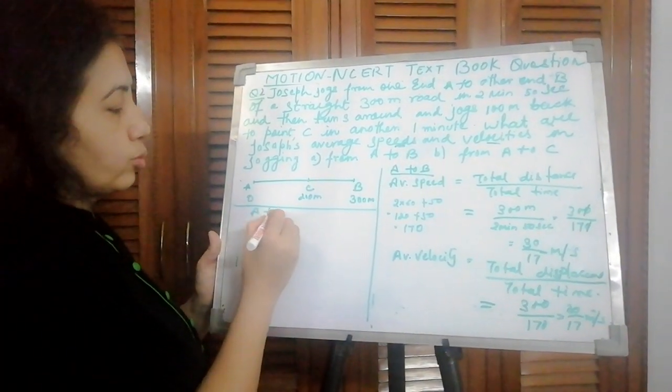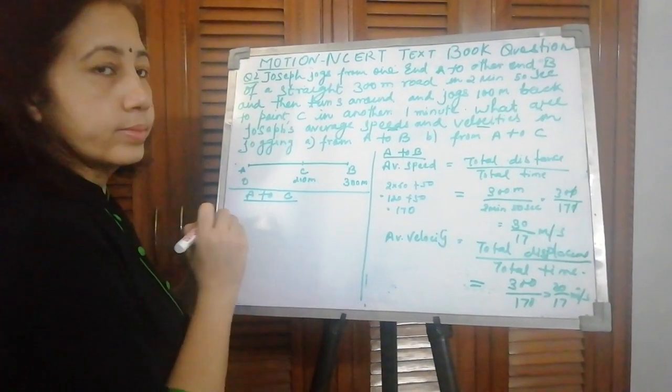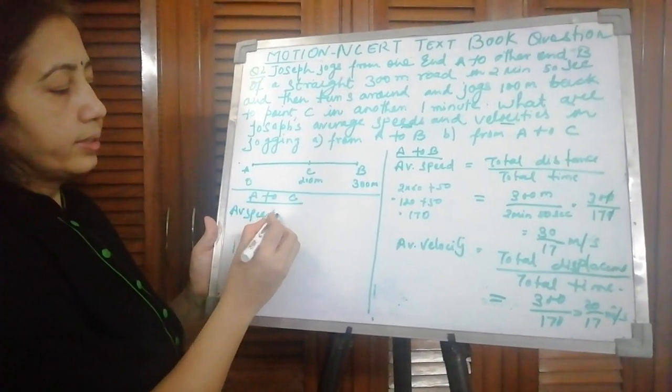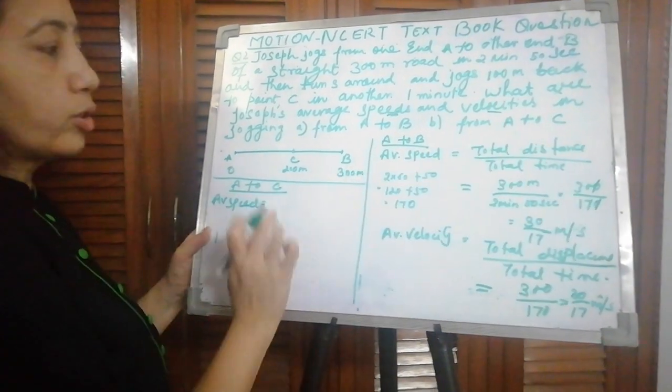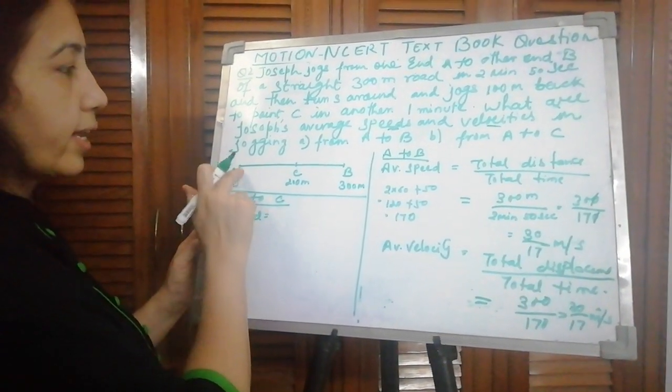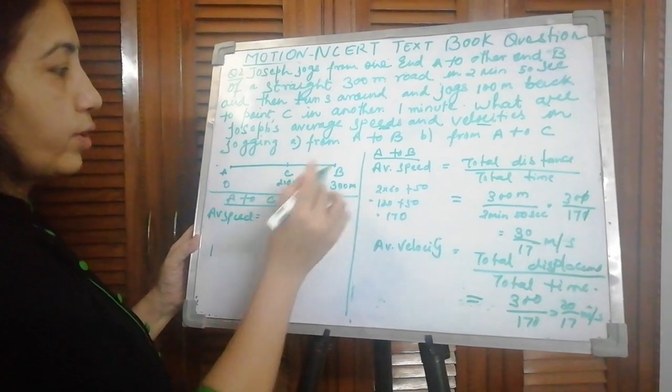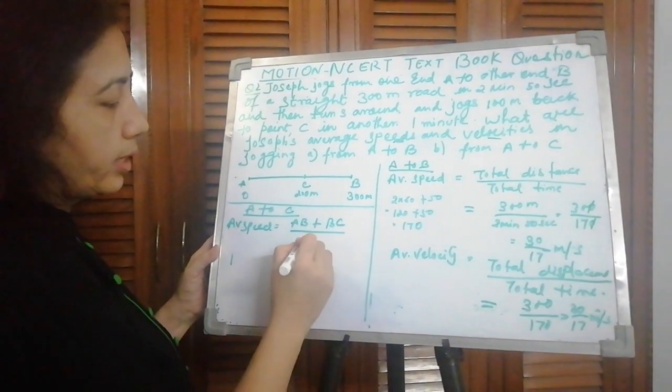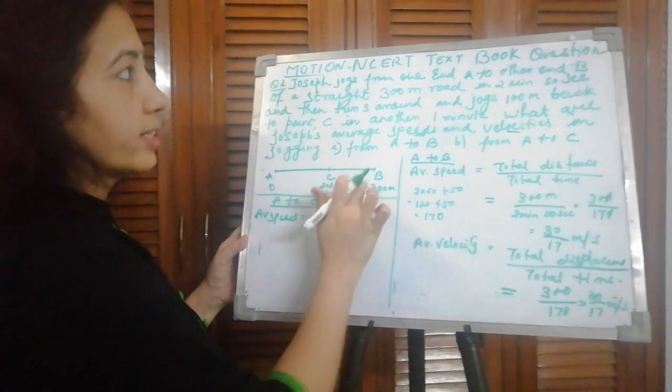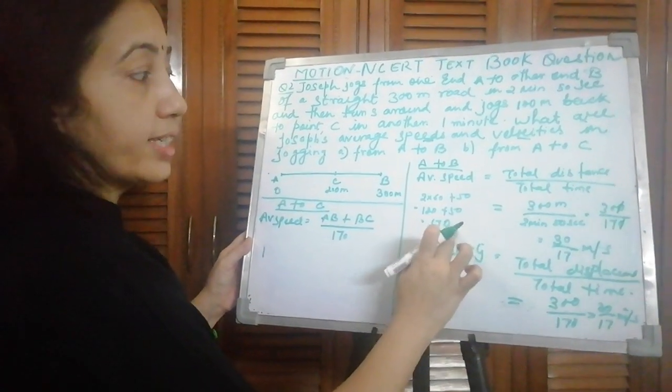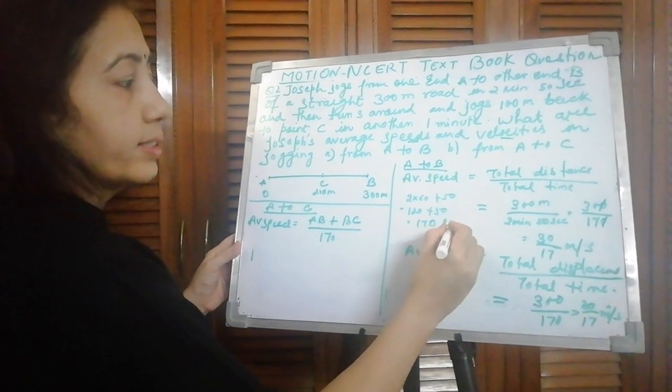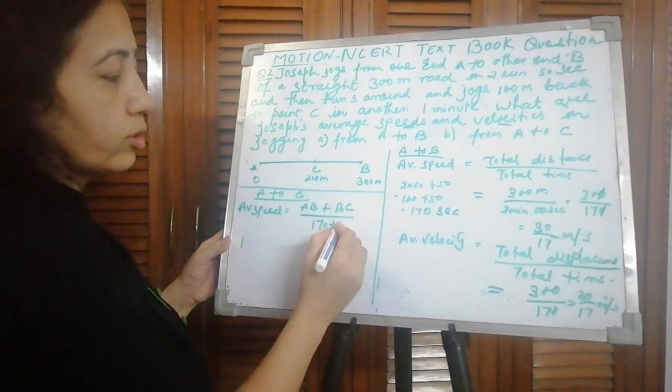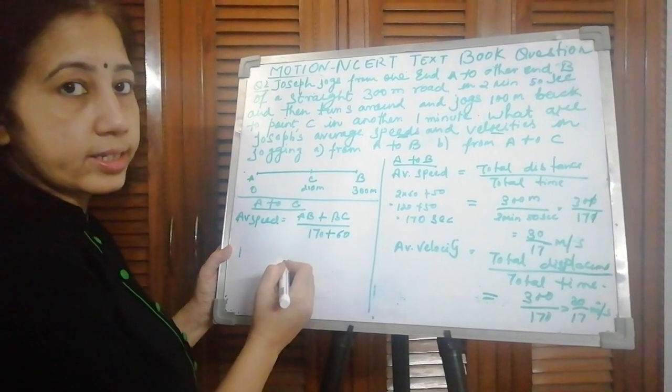Now for A to C, average speed. Again, total distance upon total time. Total distance: went from A to B, then came back B to C. And total time: it took 170 seconds to go here, and coming back took 1 minute, which means add 60 seconds more.